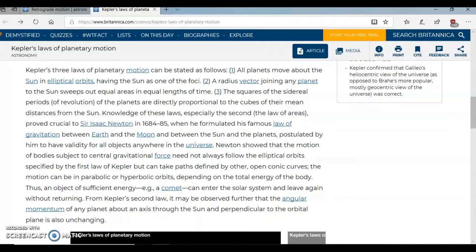Thus an object of sufficient energy, e.g. a comet, can enter the solar system and leave again without returning. From Kepler's second law it may be observed further that the angular momentum of any planet about an axis through the Sun and perpendicular to the orbital plane is also unchanging.